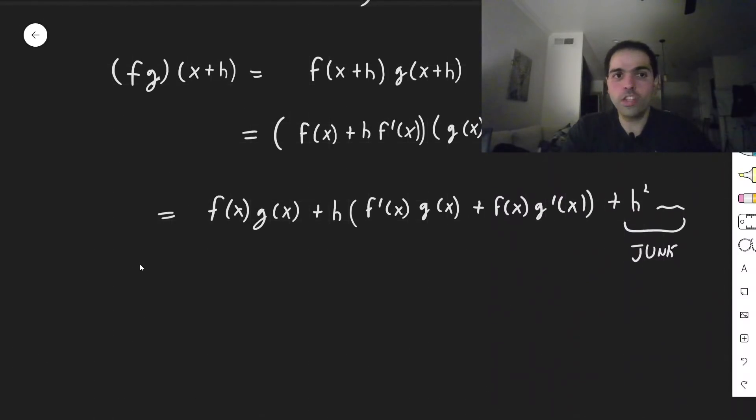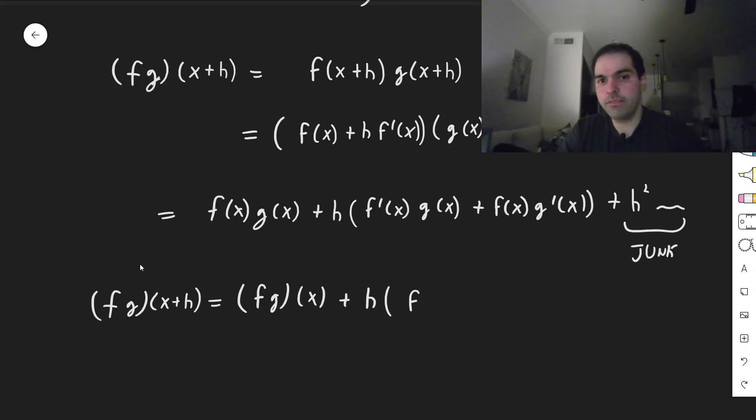So what do we get? Well, we have fg of x plus h equals fg of x, plus h times some number, plus h times f prime g, plus f g prime at x.